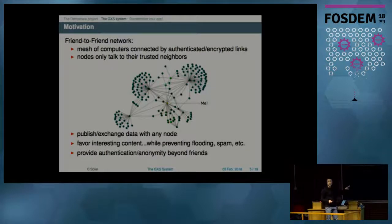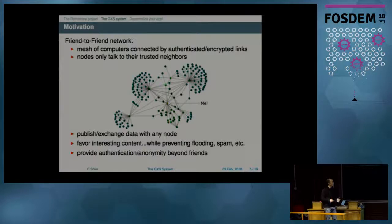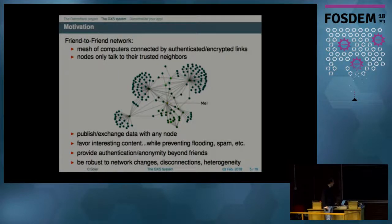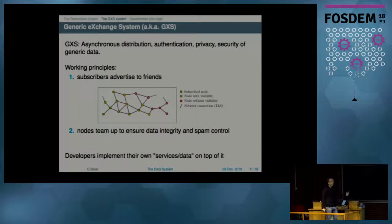The network doesn't look like a nice graph — it looks more like this snapshot from my own node. As you can see, some people have a lot of friends, some don't, and some connections might not be working at the time of exchanging data. So we need to be robust to all these problems. This led us to design the Generic Exchange System, GXS.